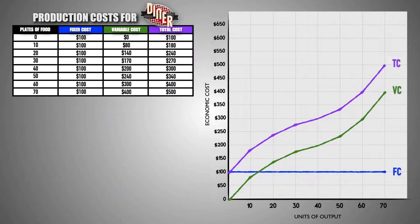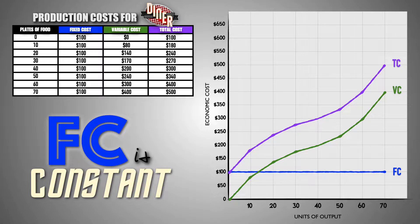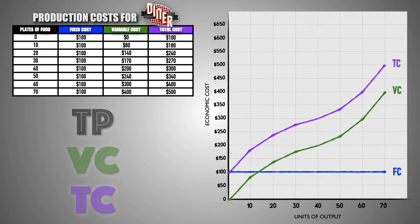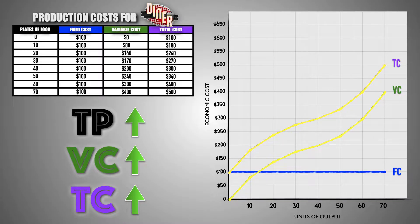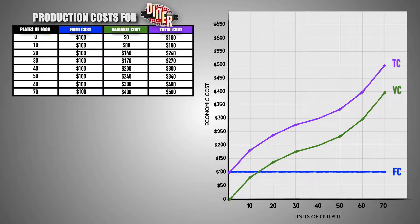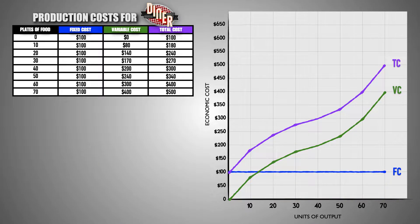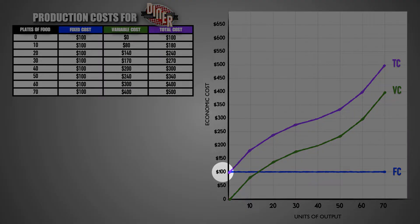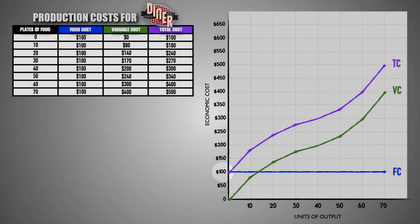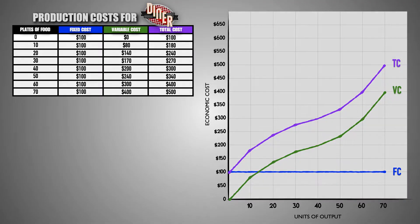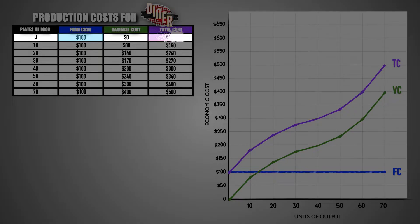Take a look at the trends and patterns in the diner's production costs. First, notice that fixed costs remain constant regardless of the number of meals produced by the diner. Also notice that variable costs and total costs increase as the diner produces more meals and decrease as the diner produces fewer meals. Also notice that the space between the total cost and variable cost curves at each output level is equal to the sum of fixed costs for the diner. Lastly, notice that the total cost curve does not begin at zero when output is at zero. Instead, it begins at $100 because it must account for the firm's fixed production costs. These costs must be paid by the diner before production even begins.